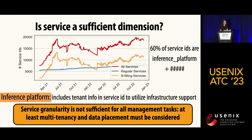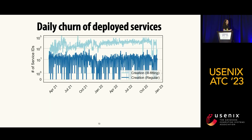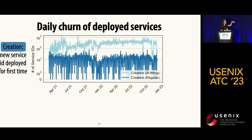Moving on to daily churn in deployed services. The x-axis again is the 22 months of historical data. On the y-axis is the number of unique service IDs, log-scaled from zero to 1,000. What I'm plotting here is creation rate — when a service ID is seen for the first time.